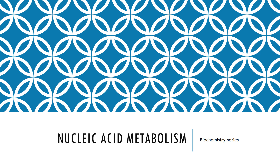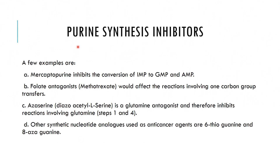Welcome to Inert Chemistry. In today's lecture we are discussing the purine synthesis inhibitors. The first is mercaptopurine — it inhibits the conversion of inosine monophosphate to guanosine monophosphate and adenosine monophosphate.